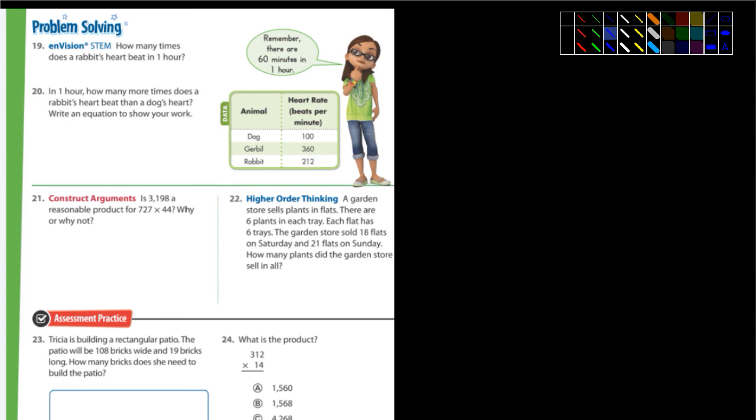And I can tell, rabbit's 212, the dog is 100. So you're simply going to subtract the dog. And I'll just put it like this. I'll put rabbit. And you're going to subtract the dog. And you'll get an answer. All right. And then it says, write an equation to show your work. Well, that would be the equation. The rabbit's heart beat subtracting the dog's heart beat.